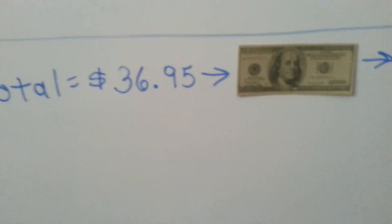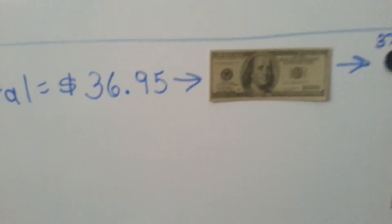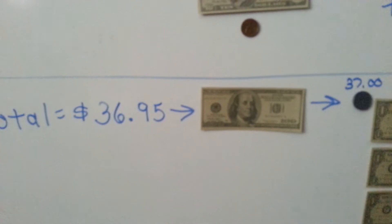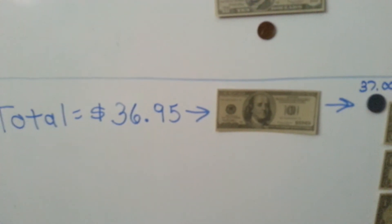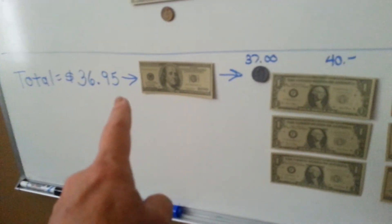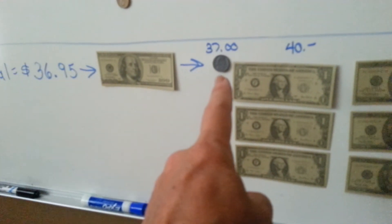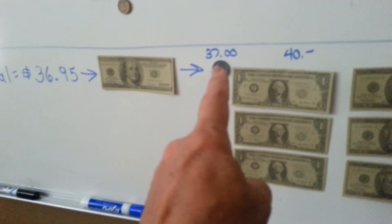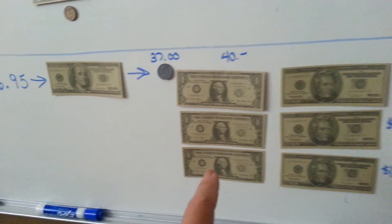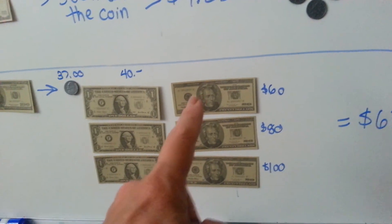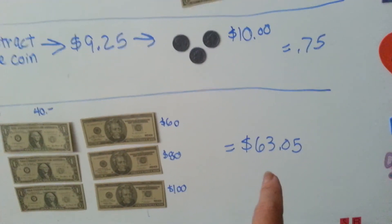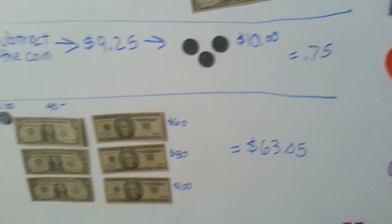If your total is $36.95 and they hand you a $100 bill, the first thing I would say is, excuse me, but do you have anything smaller? But let's give them their change. $36.95 — hand them a nickel and now you're at $37. Then $38, $39, $40, and now if you give them three twenties, you will have given them change for $100 and you'll have given them $63.05.